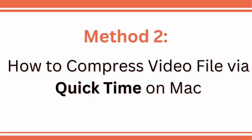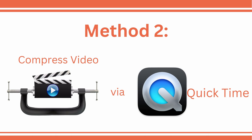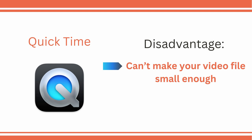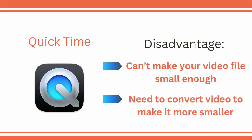For the second method, if you are a Mac user, you should know how to compress video files with your device. QuickTime Player is one of the pre-installed applications you can use to reduce the size of your video file on your Mac. However, this tool has a disadvantage — you can't make your video file small enough, especially if it's an MOV file format. As a result, you have to convert it and make it smaller. Yet, it is still a good choice if you don't have to reduce the video file size much.